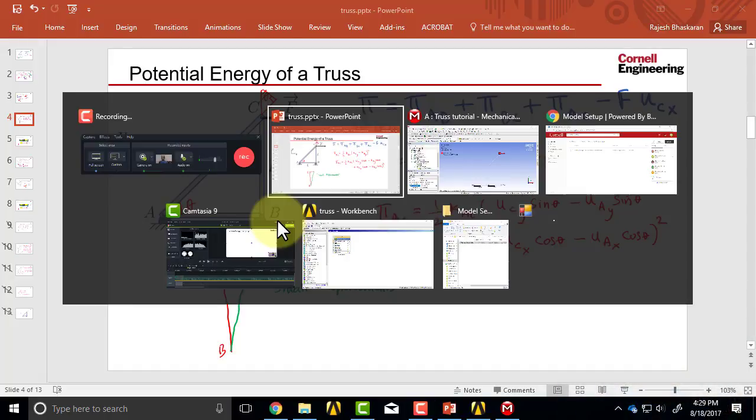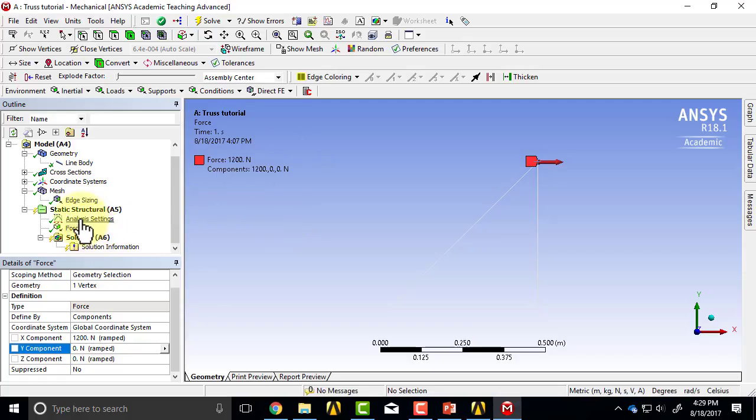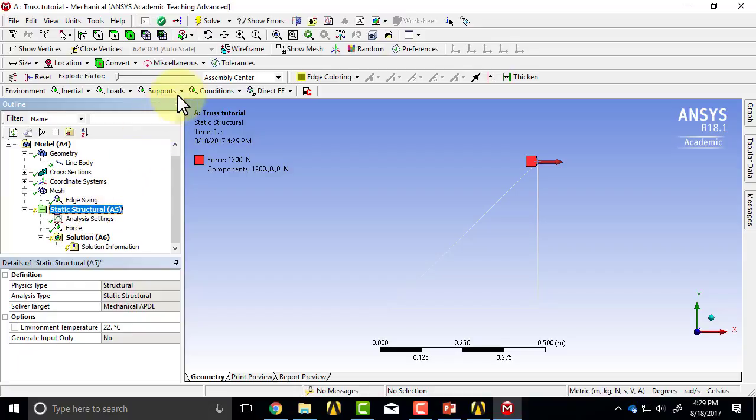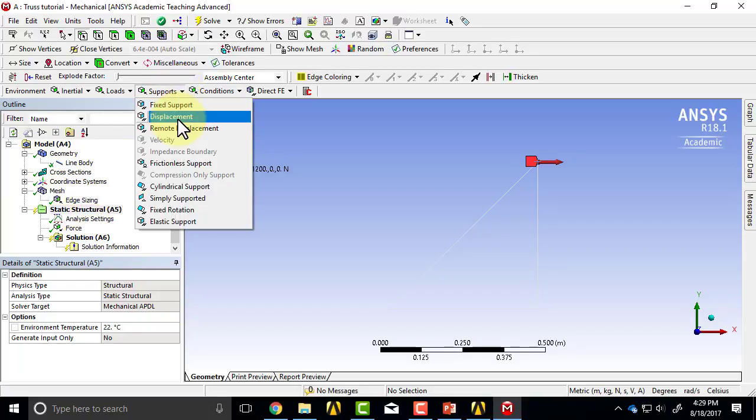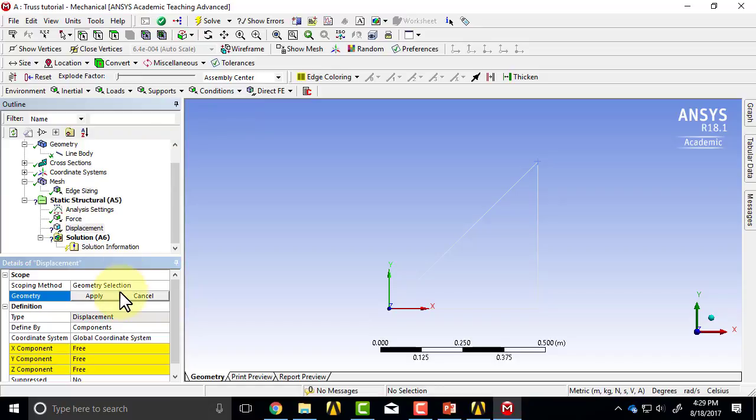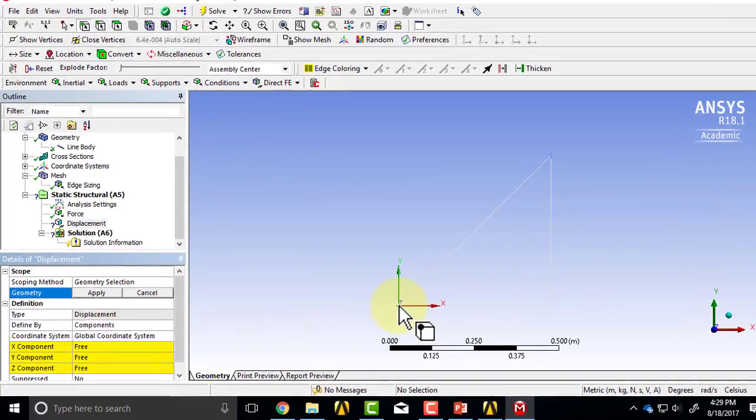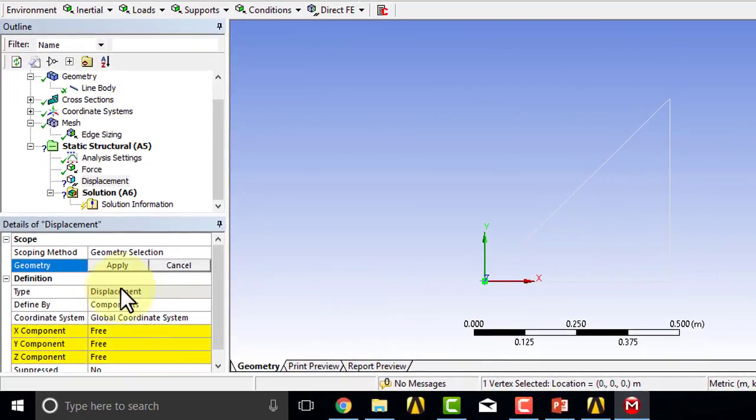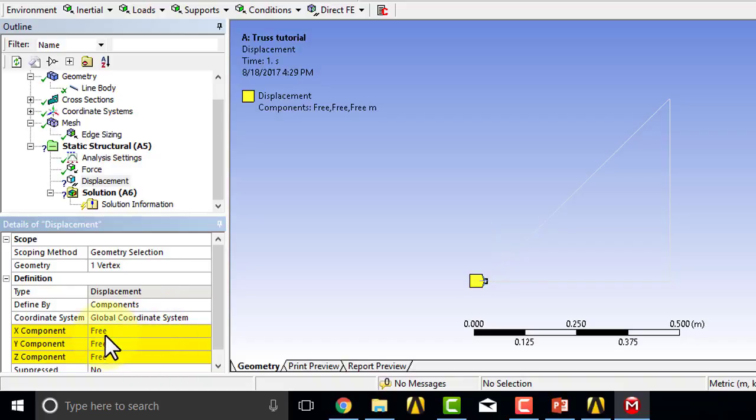So I'll go to mechanical and I'll highlight static structural and say supports displacement, and I will start with this pin over here, or vertex.